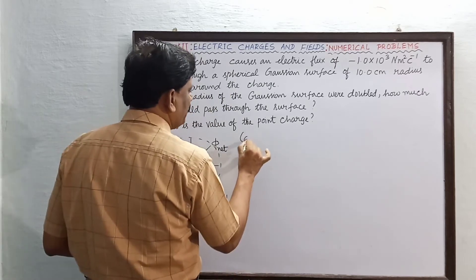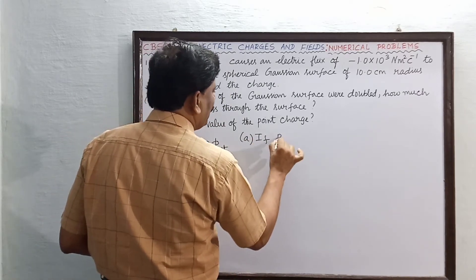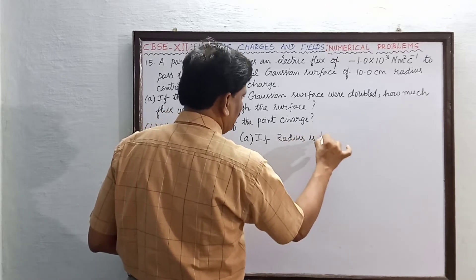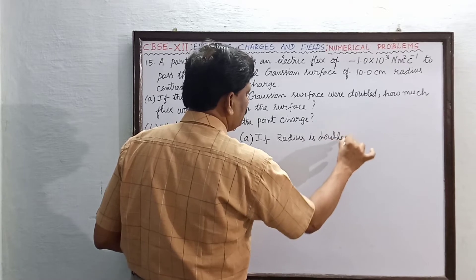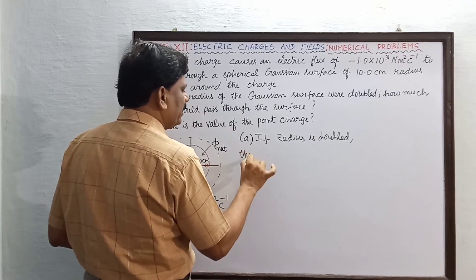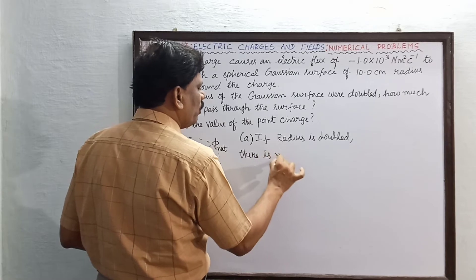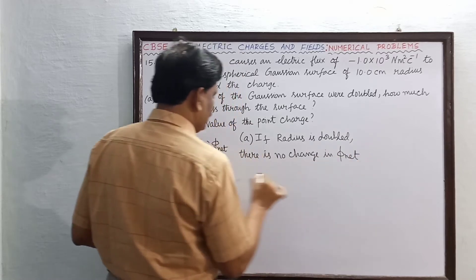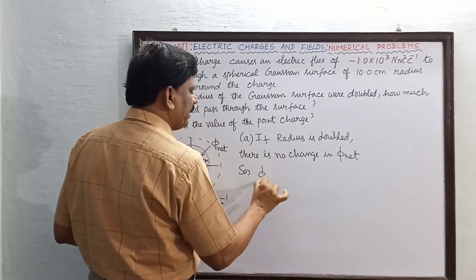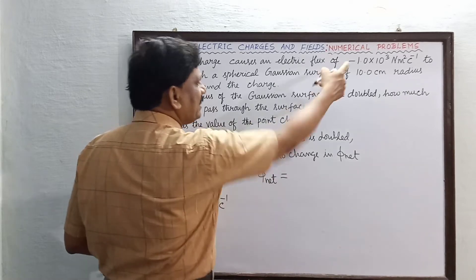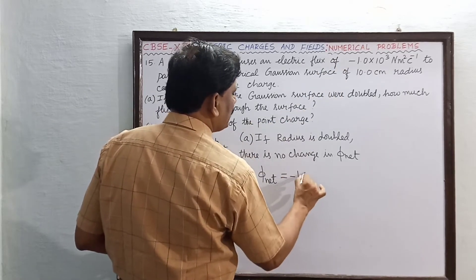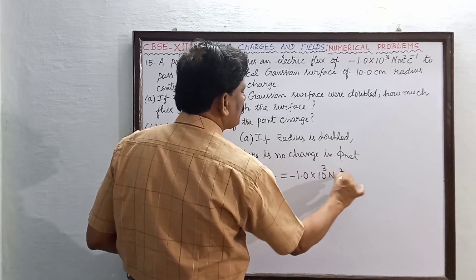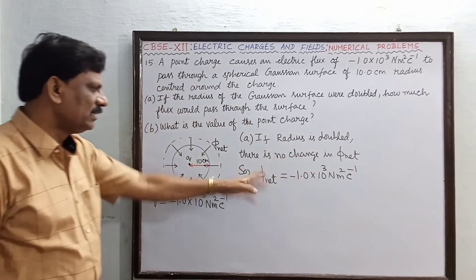So for subdivision A, if the radius is doubled, there is no change in the net electric flux. The net electric flux phi net remains the same value: minus 1.0 into 10 to the power of 3 Newton meter square per Coulomb.